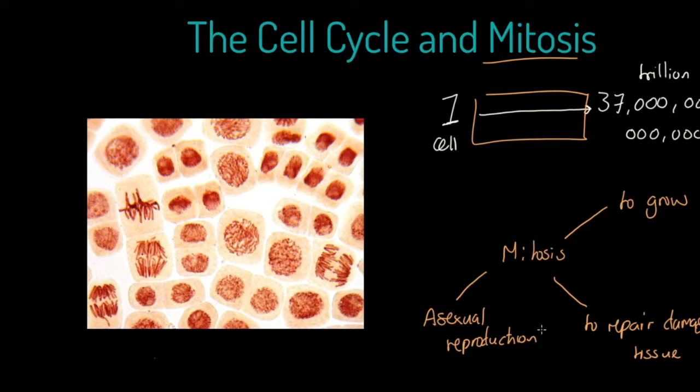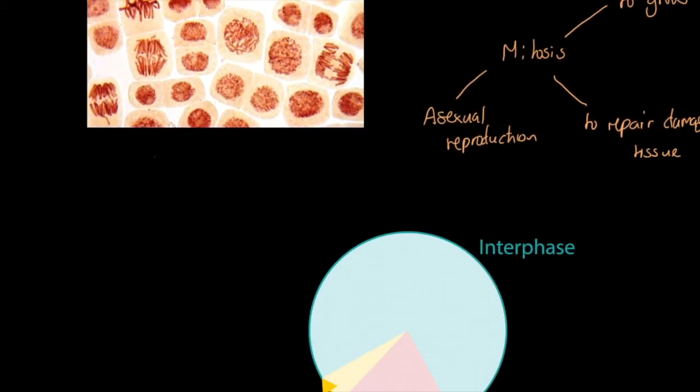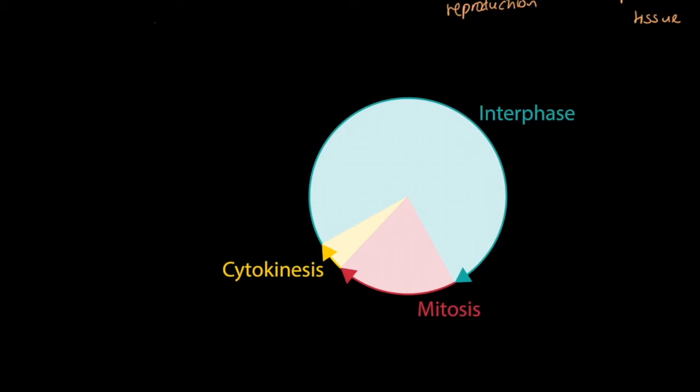I want to introduce you to what we call the cell cycle. You'll see here that the cell cycle has three parts. It is dominated by one part which we refer to as interphase. Interphase is when the cell prepares to divide, because this mitosis thing is all about the division of cells. The cell prepares to divide. That's what's happening for the majority of a cell's existence.